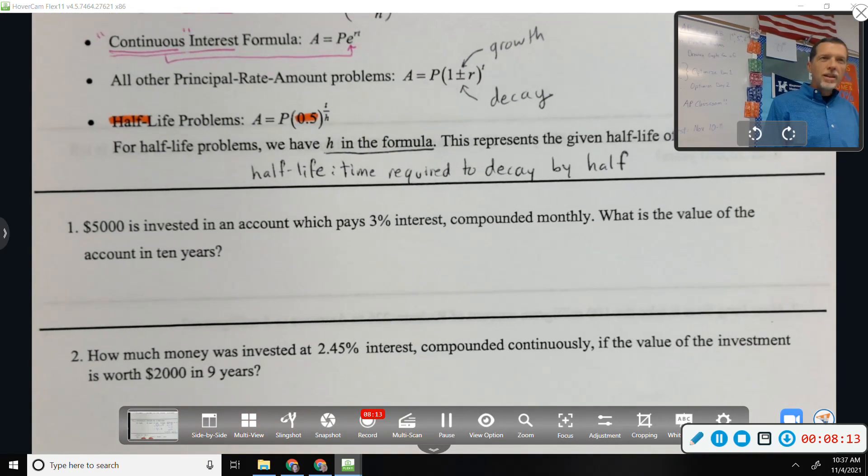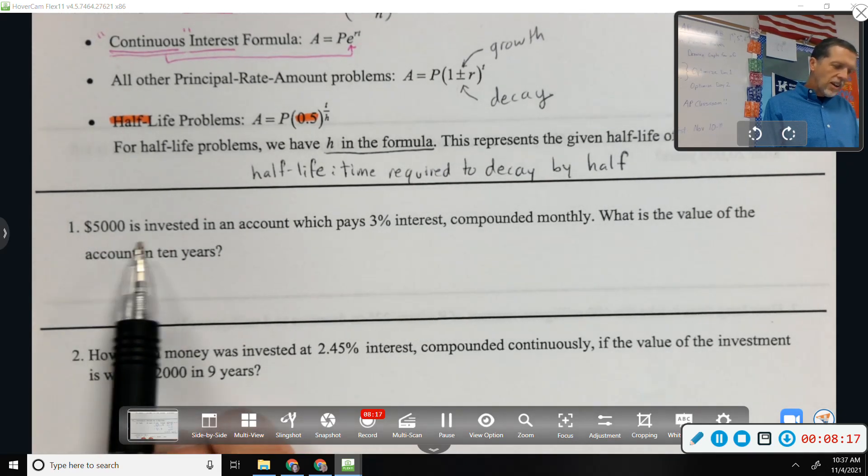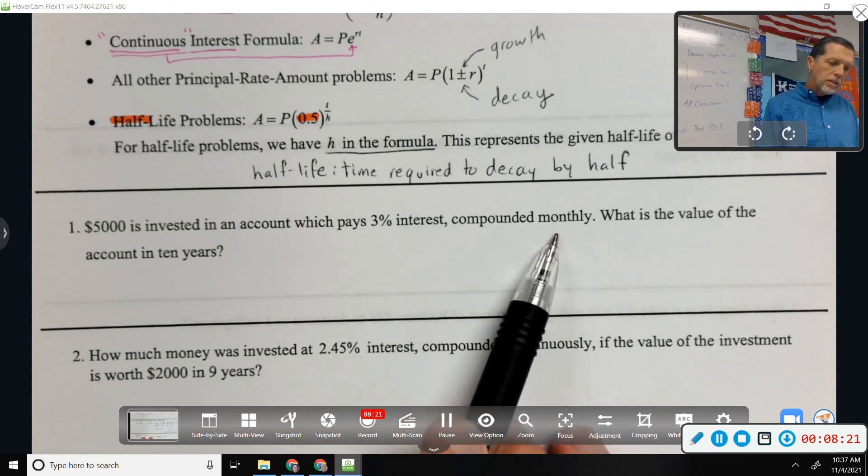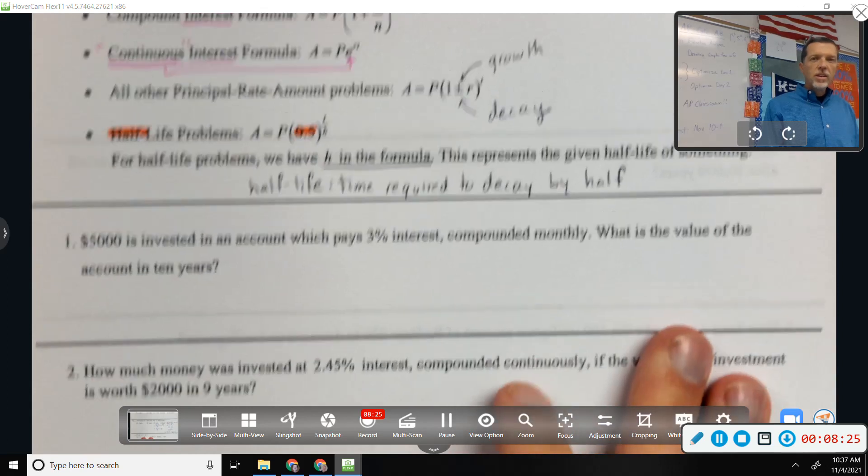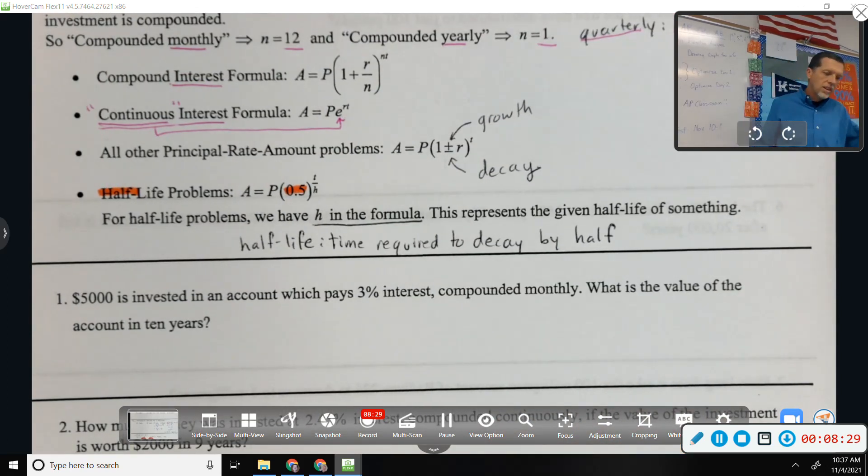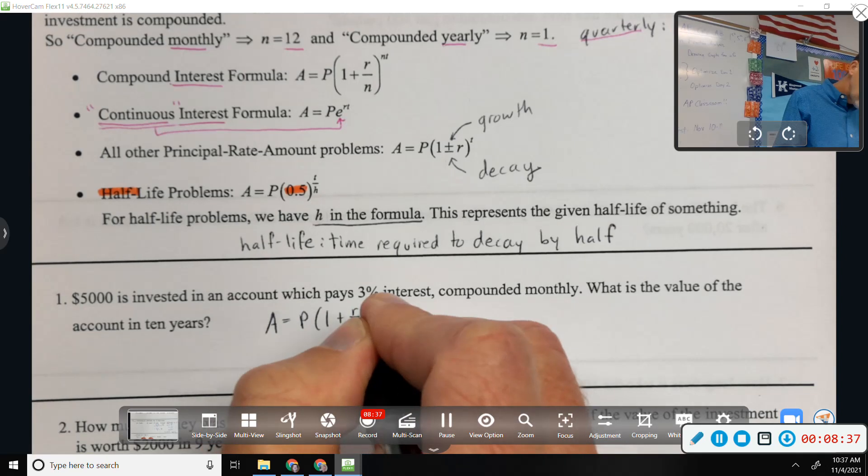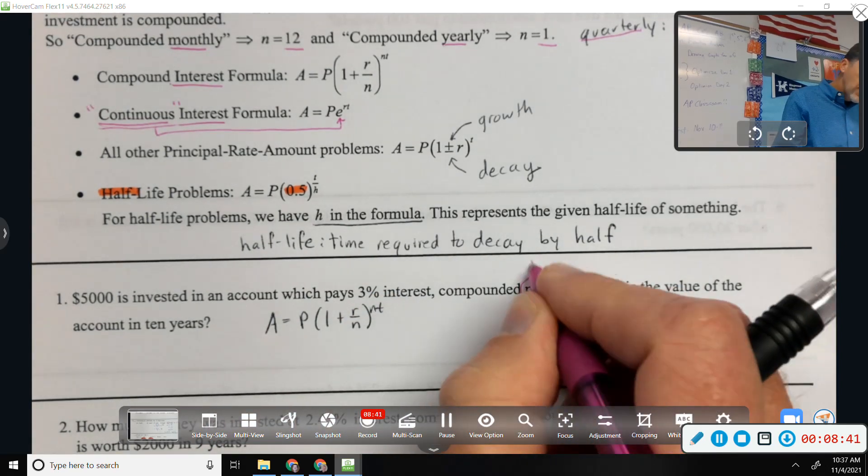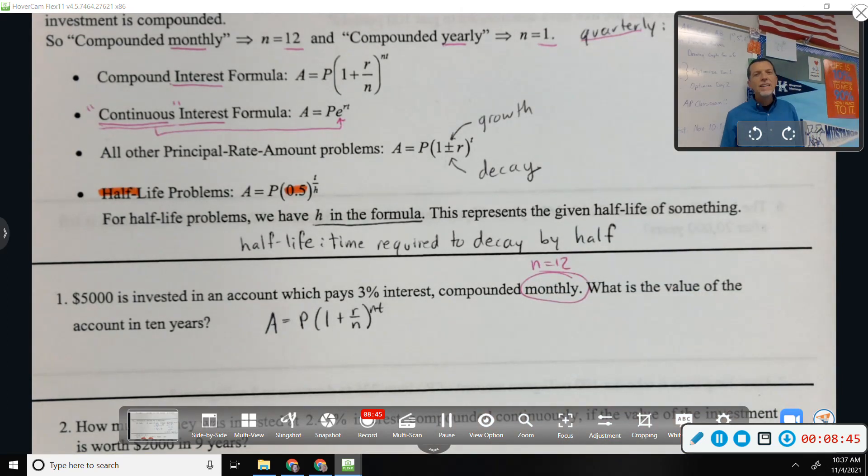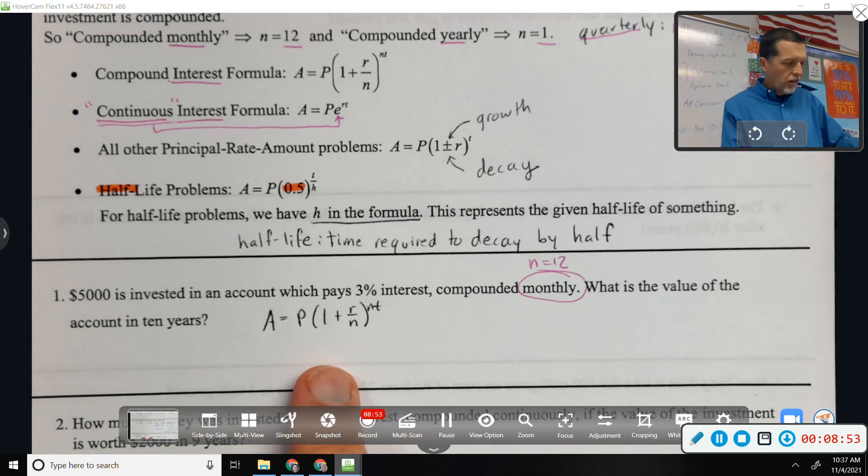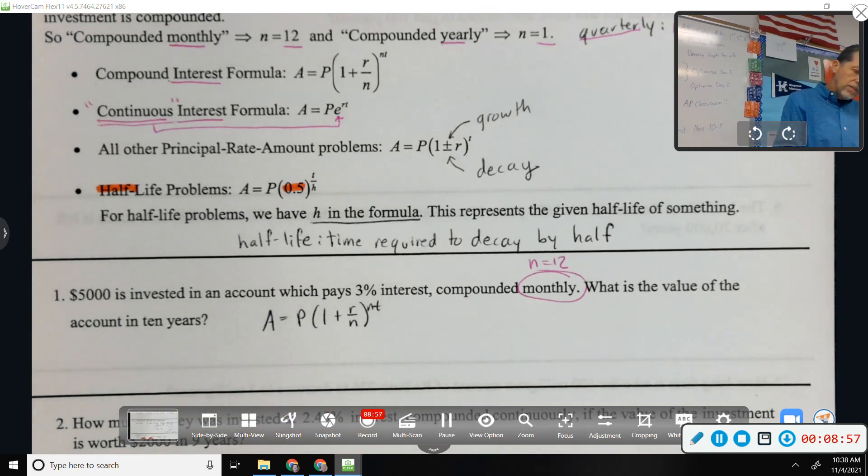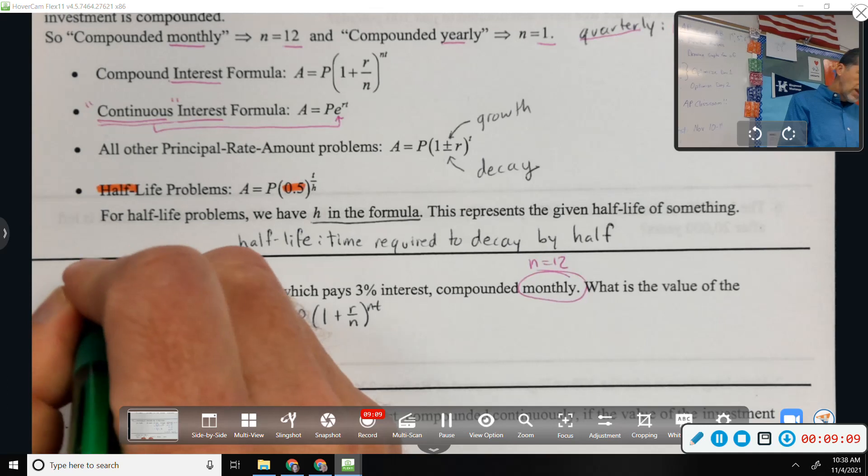All right, let's do some problems and address some of these questions. $5,000 is invested in an account which pays 3% interest compounded monthly. What is the value of the account in 10 years? So job one is to pick the correct formula. The first one. How did you know it was the first one? The monthly. Yeah, the monthly was kind of the giveaway. N equals 12, so I need to pick the formula that's got N in it. In fact, now we need to figure out the rest of these variables.